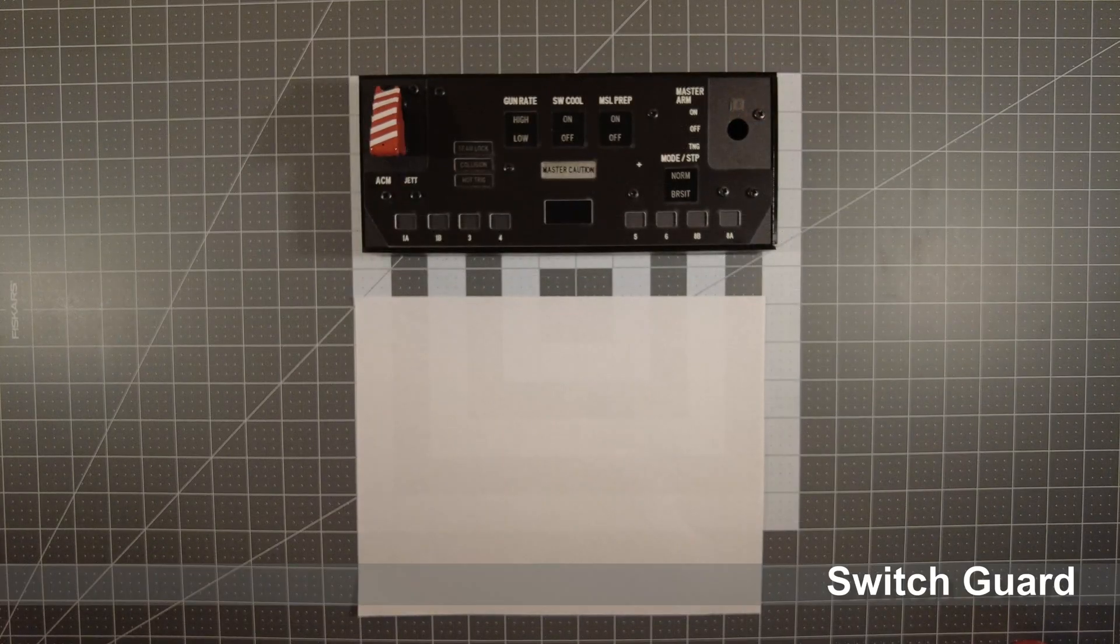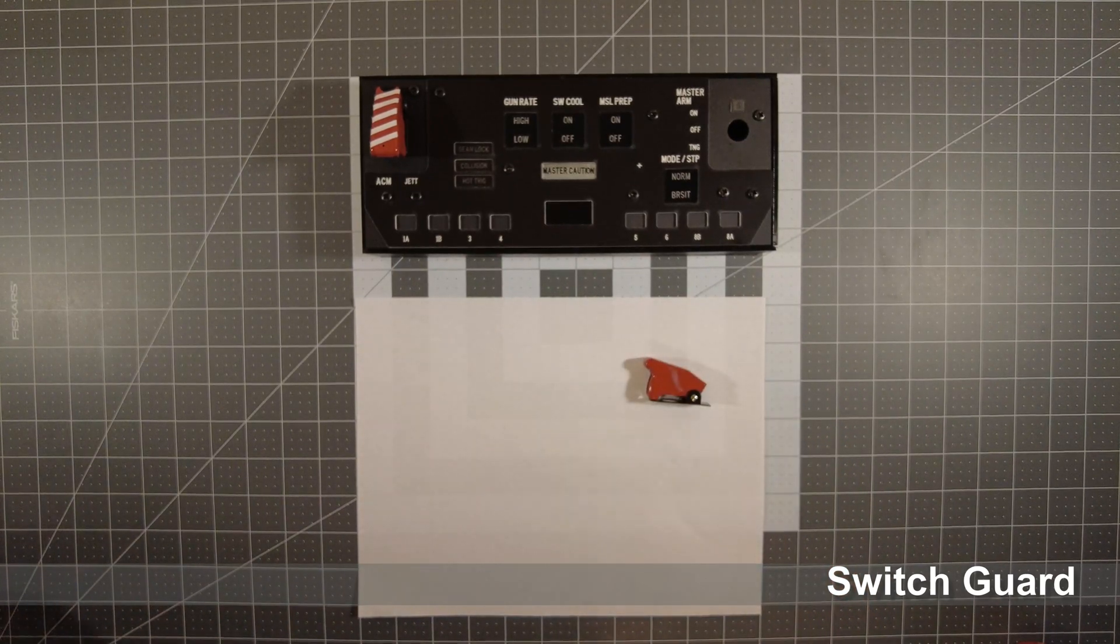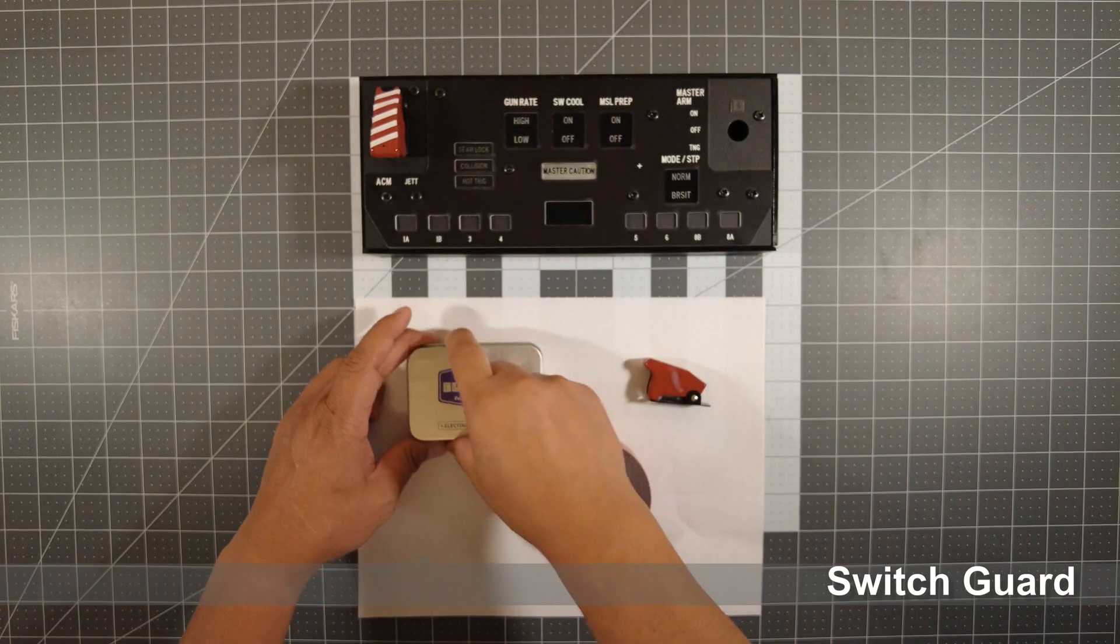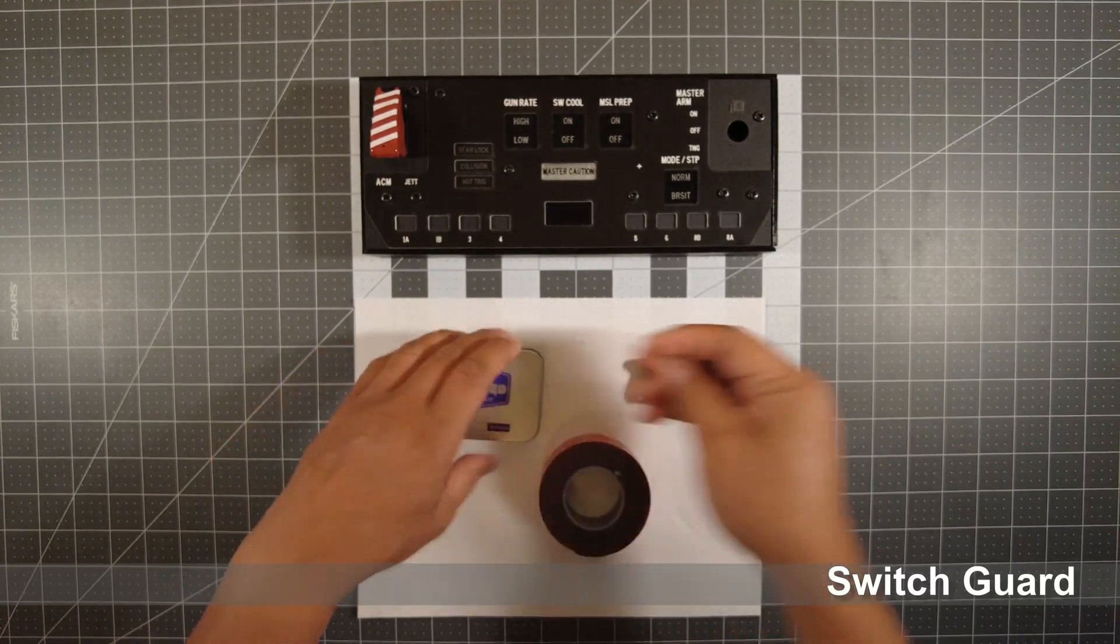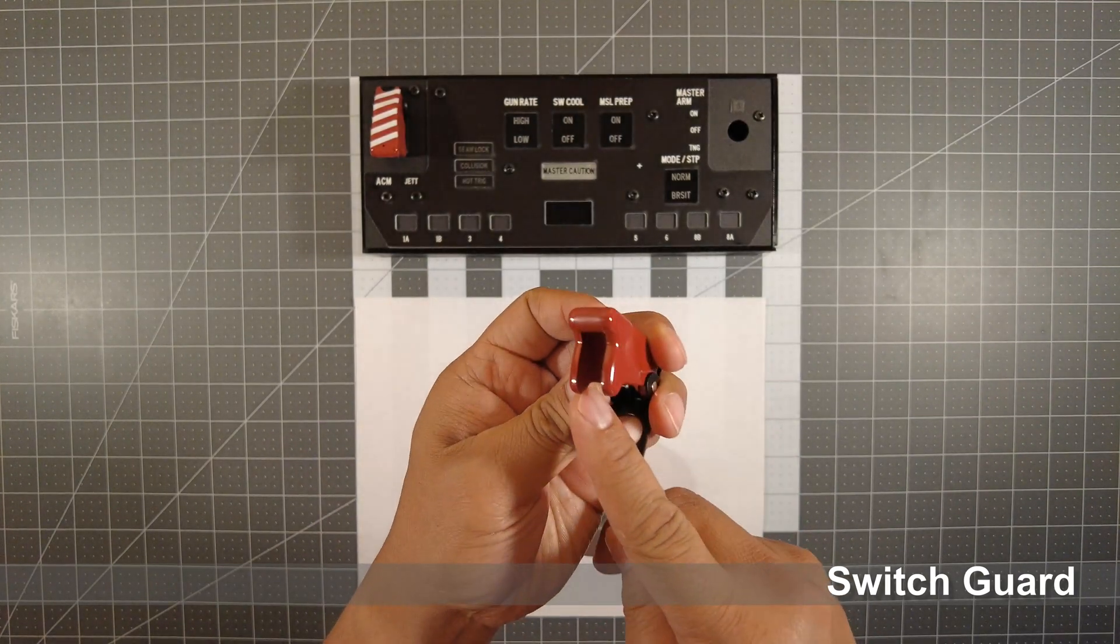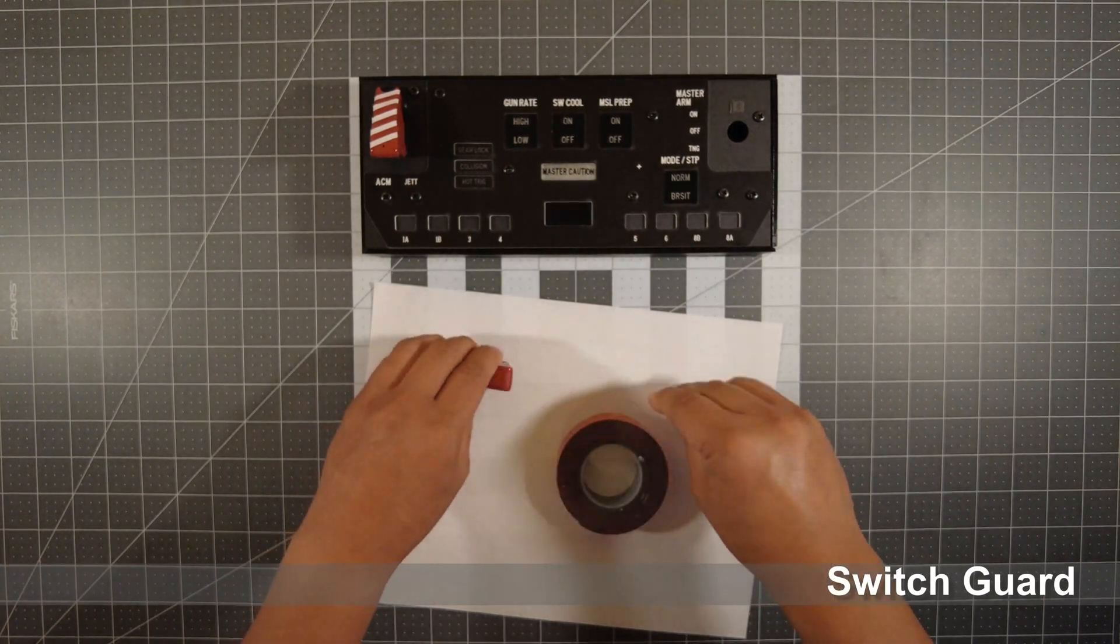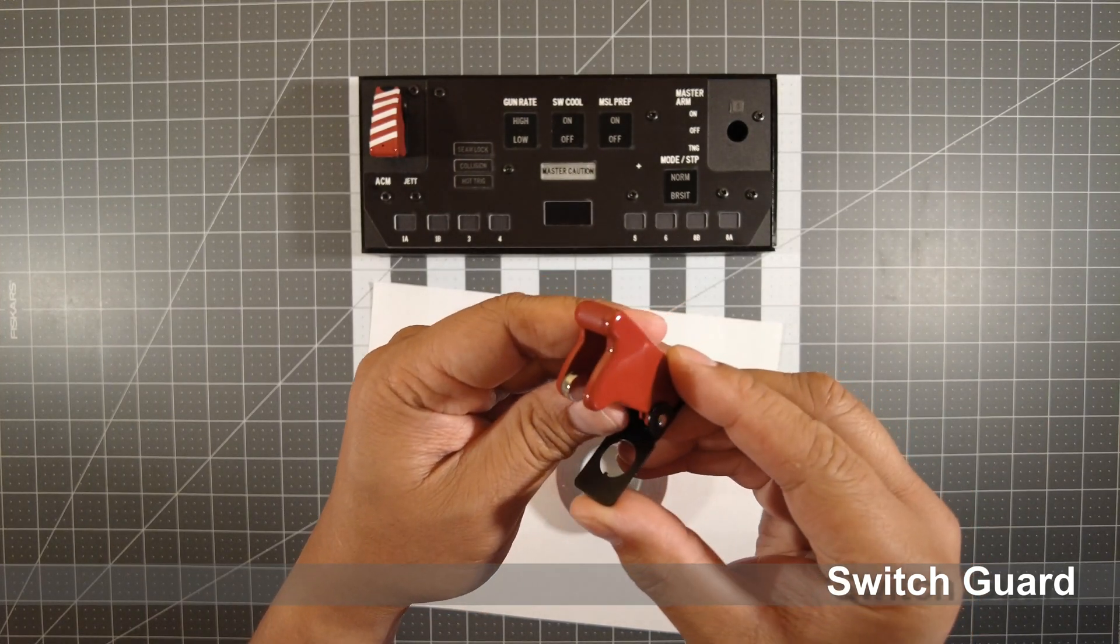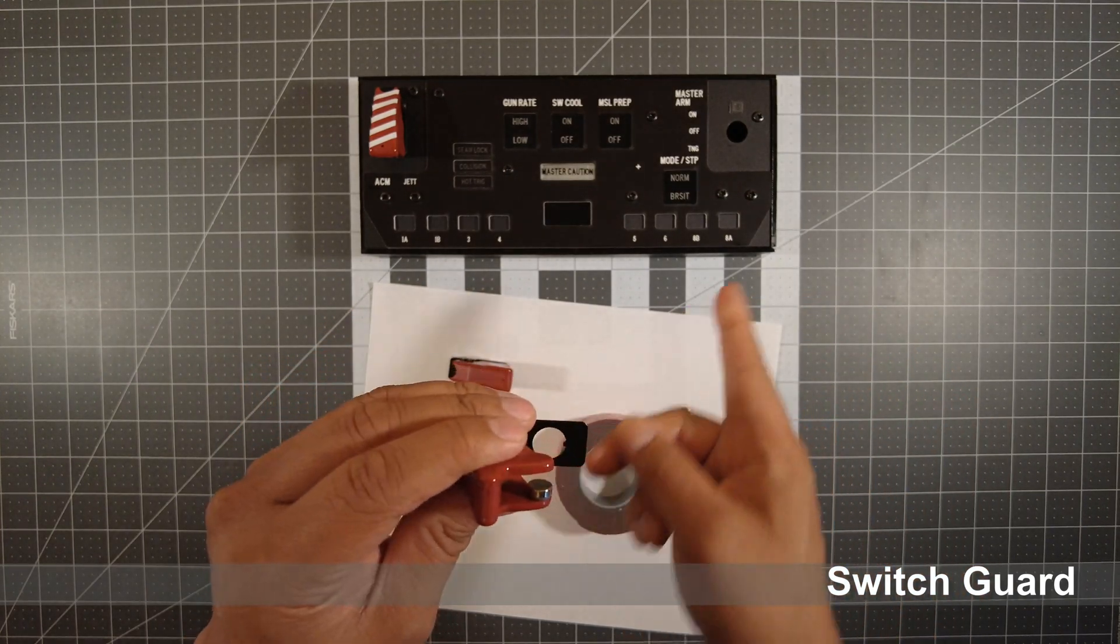All right, we're going to attach the magnet on the inside of the switch guard. You're going to need your switch guard, the wires, and you're going to find the largest magnet that you could fit inside the switch guard. Place it on the inside using mounting tape. The finished product is going to look like this. This is what's going to actuate the reed switch on the inside of the panel.